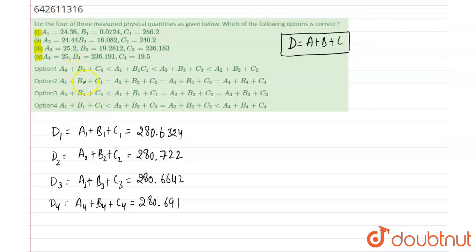According to significant figures in addition, in the final result we will round up the result up to minimum decimal place. In the first condition minimum decimal place is one, so we will round up to single decimal place, that is equal to 280.6. In second, minimum decimal place is one so we will round up it up to one decimal place, that is equal to 280.7.